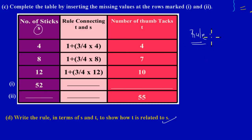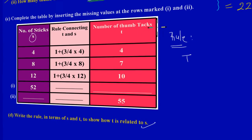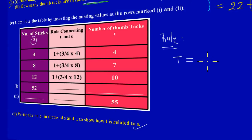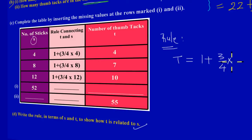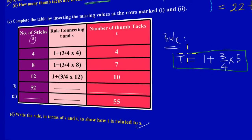So my rule is: T, the number of thumbtacks, is equal to 1 + (3/4) × s, where s is the number of sticks. That is the rule connecting t and s, and this answers Part D.